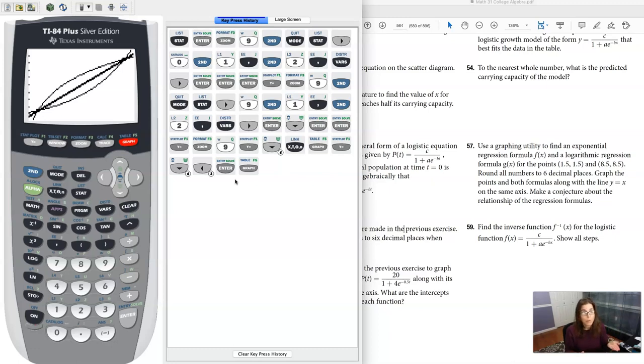So this logarithmic model and this exponential model, those are inverse functions of one another. And we've been talking about that in Chapter 6 as well, that exponential functions and logarithmic functions are inverse functions of one another. And here's just the graphical view of that through this exponential and logarithmic model.